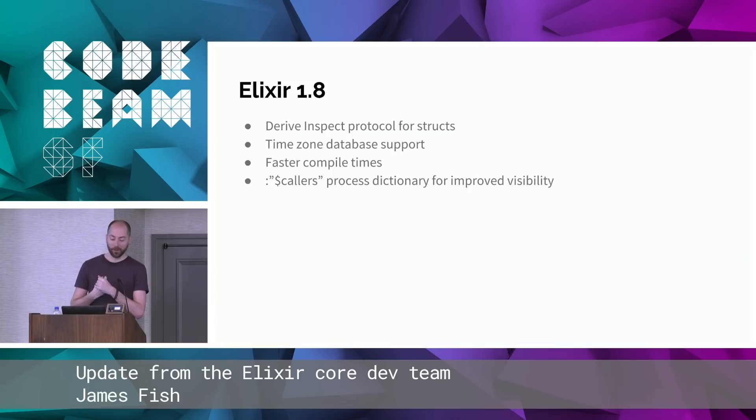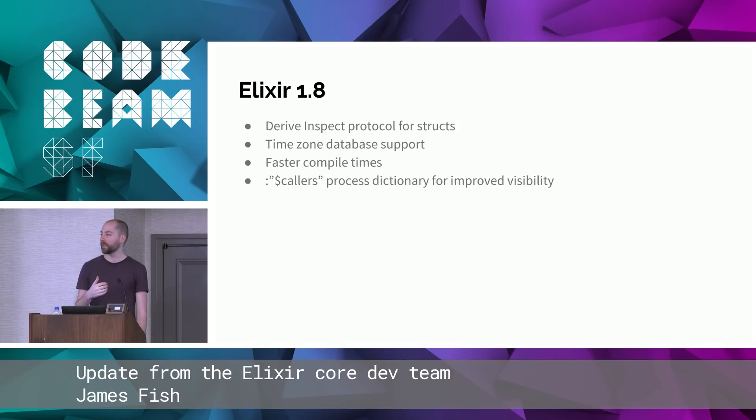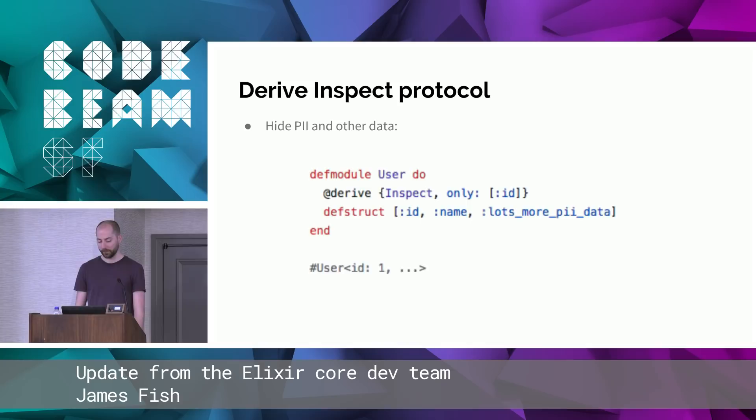Elixir 1.8, six months later. Elixir isn't moving super quickly at the moment — it's very stable. We added a way to default the inspect protocol so you don't have to implement inspect for every single struct you create. We added time zone database support, faster compile times, and a thing called callers that I'll talk about shortly.